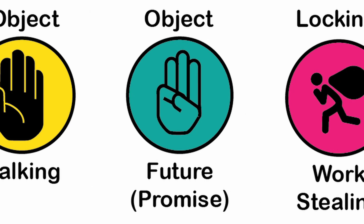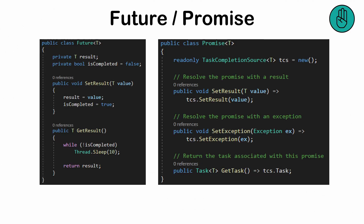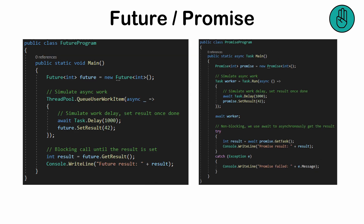The future, or promise pattern — used to handle asynchronous operations. A future focuses on retrieving a value or an error when the operation completes, while a promise includes the ability to explicitly resolve or reject the result. This pattern helps manage complex asynchronous workflows and avoid callback hell. It represents a placeholder for a result that may not yet be available but will be resolved or rejected in the future.